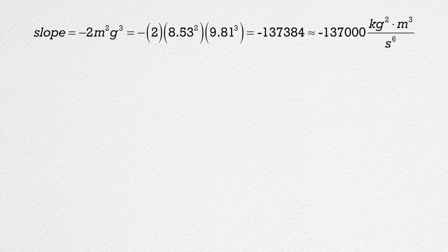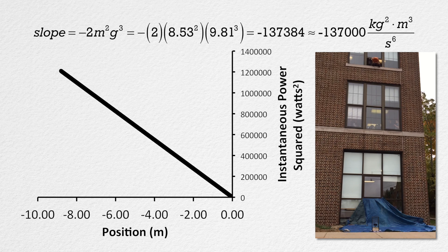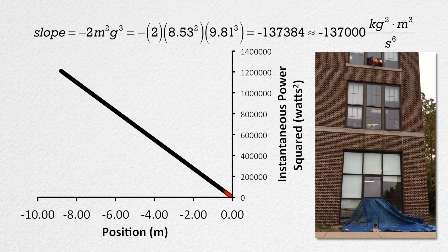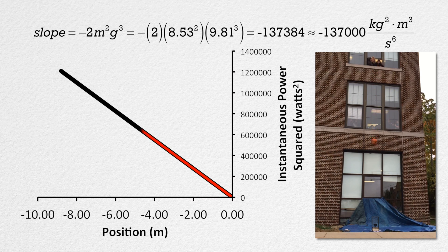The slope ends up being negative 2 times 8.53 squared times 9.81 cubed, which is roughly negative 137,000 kilograms squared times meters to the fourth power divided by seconds to the sixth power. The instantaneous power squared starts at zero and increases linearly to a value of roughly 1.2 million watts squared at roughly 9 meters below where the pumpkin started. Notice that if you think in terms of time on this graph, you would move from right to left as the pumpkin falls — it is a bit weird, but that is what you need to get a linear graph relating the power delivered by the force of gravity to the pumpkin as a function of y-position.